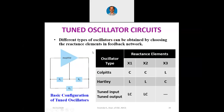Looking at this table: oscillator type, X1, X2, X3 — if X1 and X2 are capacitances and X3 is inductance, then it is called the Colpitts oscillator. If X1 and X2 are inductances and X3 is capacitance, then it is called the Hartley oscillator. Without using X3, if we use only X1 and X2, that is called a tuned input tuned output oscillator. We are going to see the Colpitts and Hartley oscillators only.